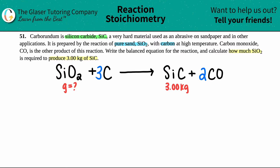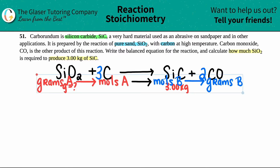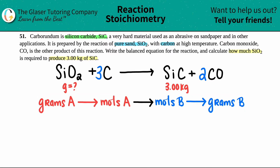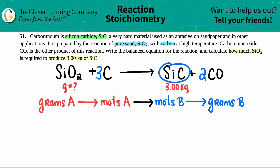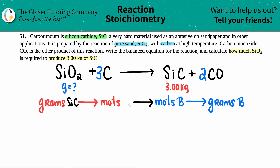The setup for stoichiometry is this flow diagram — I highly recommend remembering it. It's four steps: going from one compound (A) to another (B) — grams to moles, to moles, to grams. We just need to tweak this to our specifics. We start with silicon carbide, SiC — that's going to be in red. I'm going from grams of SiC to moles of SiC.